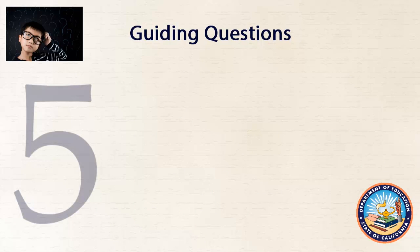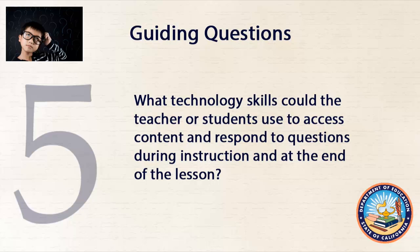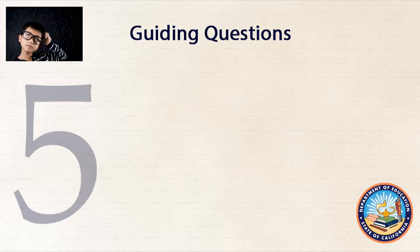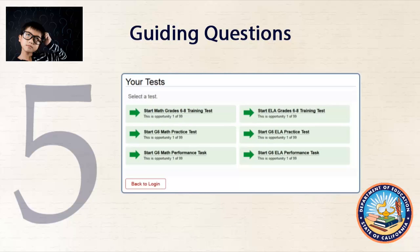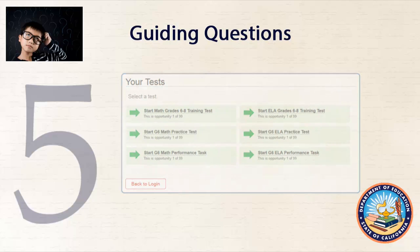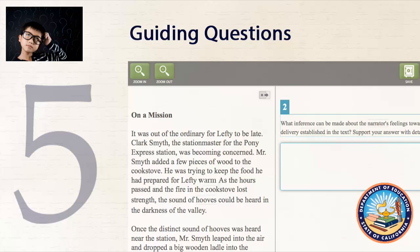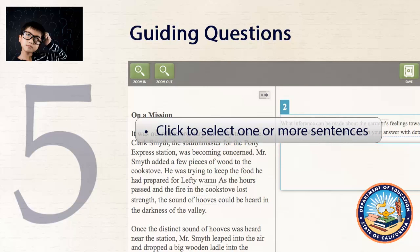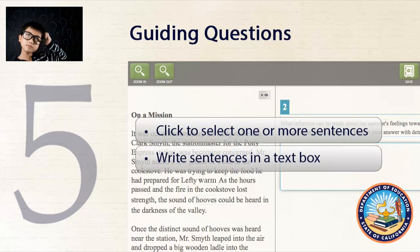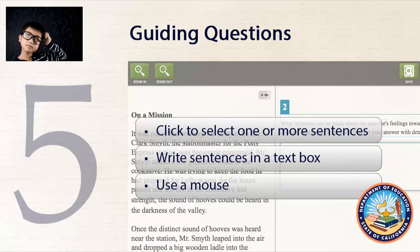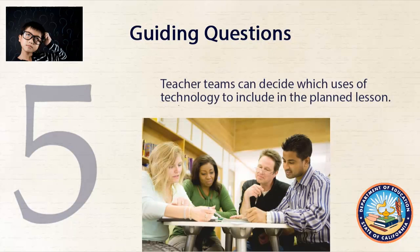Guiding Question 5: What technology skills could the teacher or students use to access content and respond to questions during instruction and at the end of the lesson? Teacher teams again review the practice and training test, this time to learn which technology skills students will need to use to identify what the text says explicitly and to select appropriate citations from the text. On the sixth grade ELA practice test, students are required to click one or more sentences from the passage and also to write sentences in a text box. Students will need to use the mouse and to have basic keyboarding skills in order to respond to these types of test items. After review, teacher teams can decide which uses of technology to include in the planned lesson and instruction.